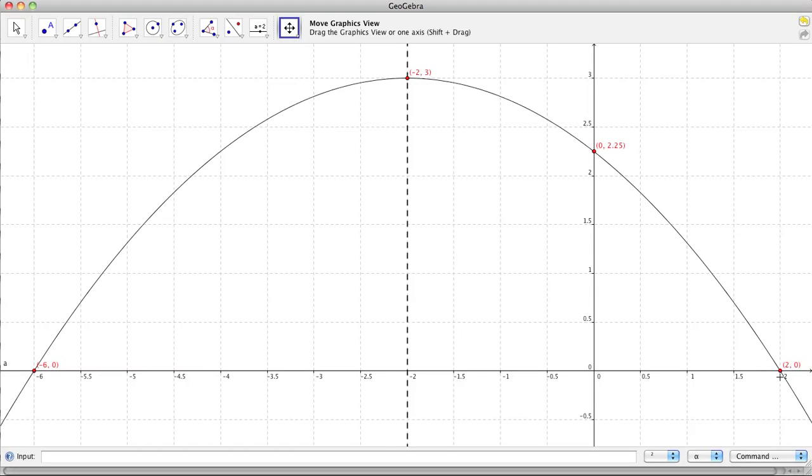Even farther to the right to find our x-intercept, we find one of those points to be (2, 0).